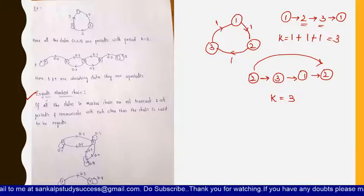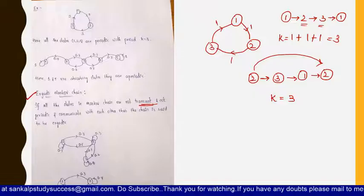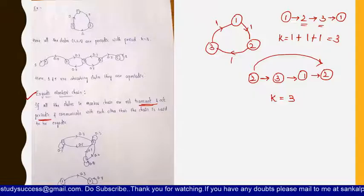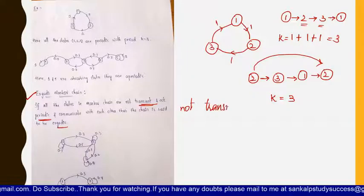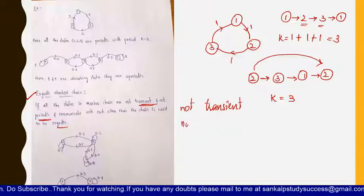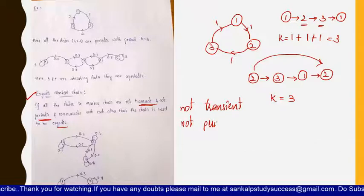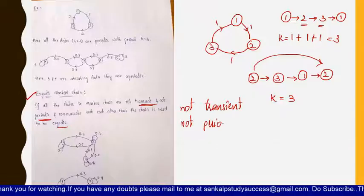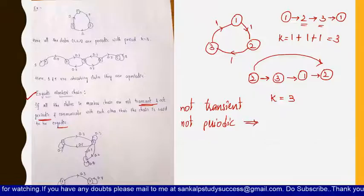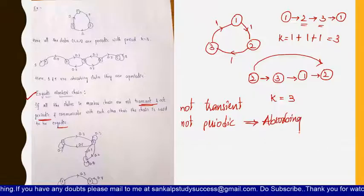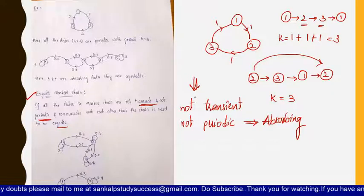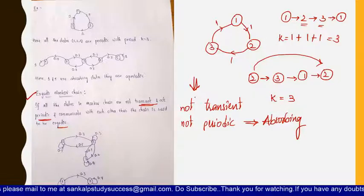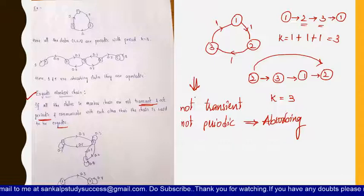Now let us see what is an ergodic Markov chain. A Markov chain is ergodic if it is not transient and it is not periodic, and all states communicate with each other. We need to remember two points: it is not transient, and it is not periodic. If it is not periodic, it can be an absorbing state, since all aperiodic states are absorbing.